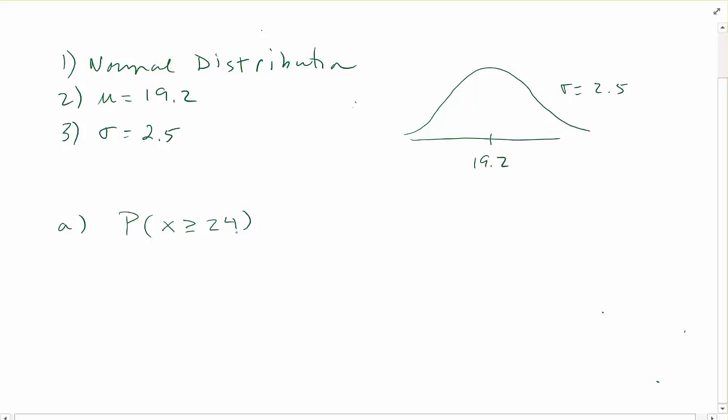Actually it would be that x is greater than 24. It wouldn't make any difference because if you remember the probability of being any particular value for a continuous random variable is zero. So we're going to make our mark here at 24, which would be maybe up here because the standard deviation is 2.5, so we're roughly two standard deviations from the center.